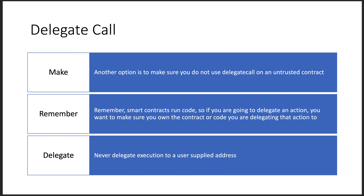When delegating a call, remember: do not use `delegatecall` on an untrusted contract. Smart contracts run code. If you're going to delegate an action, make sure it's to your own contract or your own code. You certainly do not want to delegate an action to code you're not intimately familiar with — you don't want to delegate a DAO owner-level action to some random external shop. You never want to delegate action to a user-supplied address because people make mistakes.